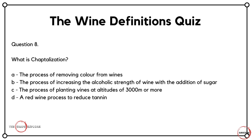Question eight — all of you WSET Level 3 students should be getting this one right off the bat. What is chaptalization? Is it A, the process of removing colour from wines? Is it B, the process of increasing the alcoholic strength of wine with the addition of sugar? Is it C, the process of planting vines at altitudes of 3000 metres or more? Or is it D, a red wine process to reduce tannin? This is all about adding sugar to wine to increase the alcohol strength, giving those yeast cells something more to convert to alcohol. The answer here is B.